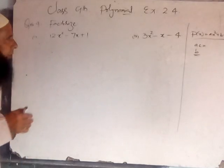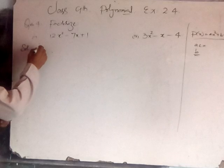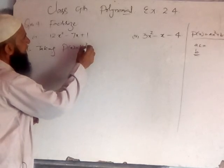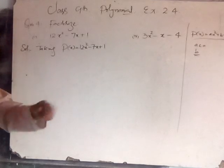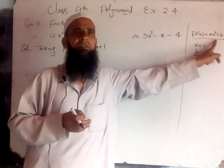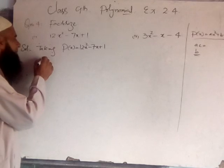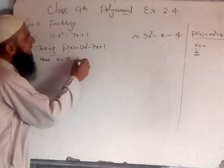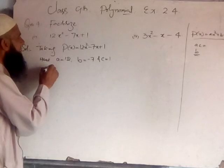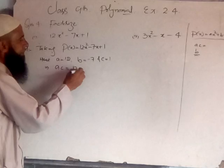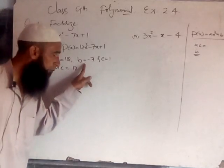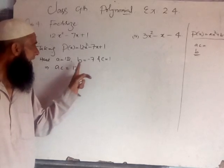Taking P(x) equal to 12x² minus 7x plus 1. Comparing with the general quadratic polynomial, here a is equal to 12, b is equal to minus 7, and c is equal to 1. This implies AC is equal to 12 into 1, that is 12. So we need two parts whose product is 12 and sum is minus 7.